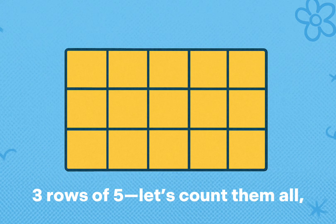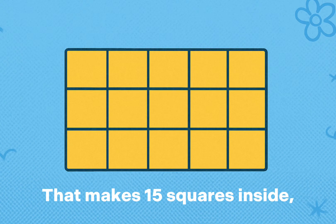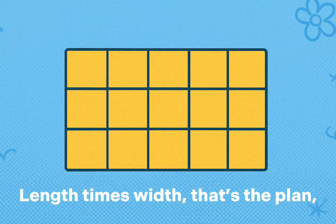Three rows of five, let's count them all. Three times five — that makes fifteen squares inside. That's the area, nice and wide.